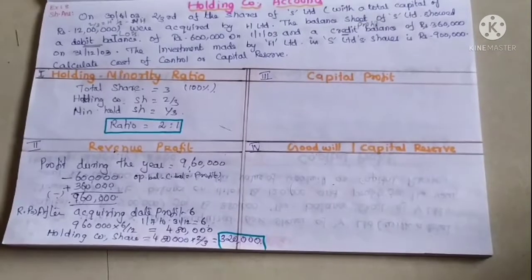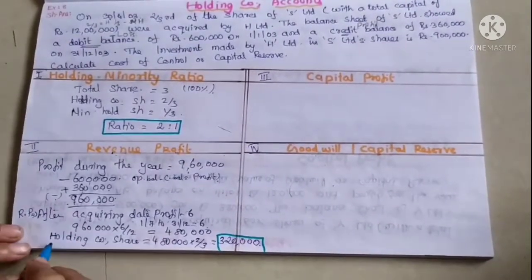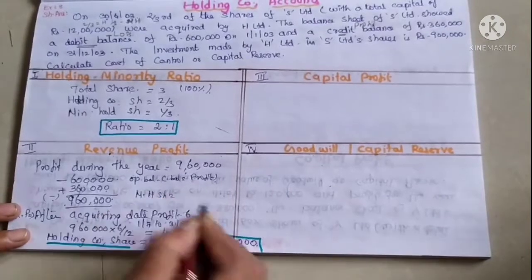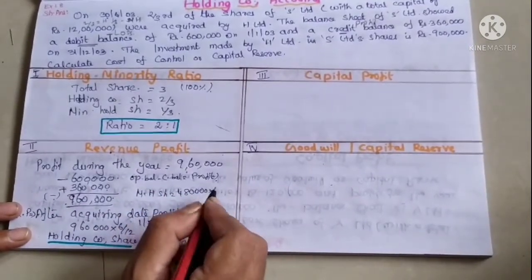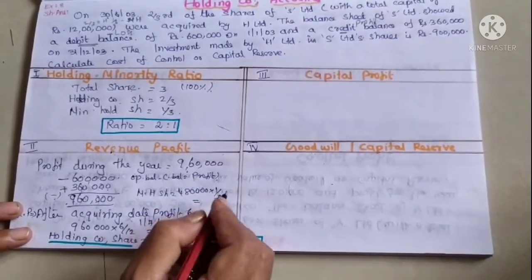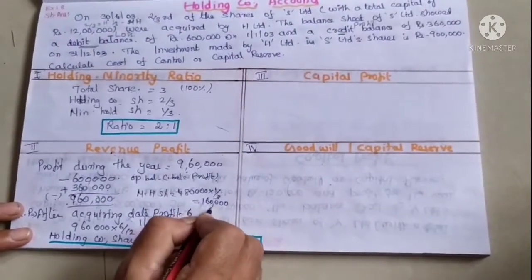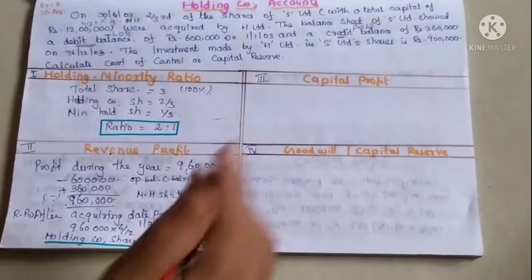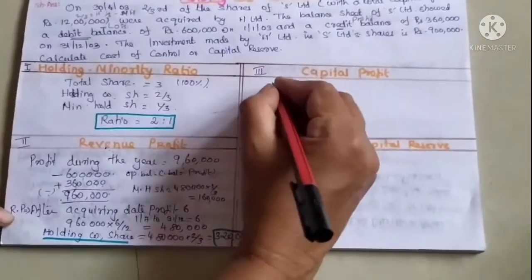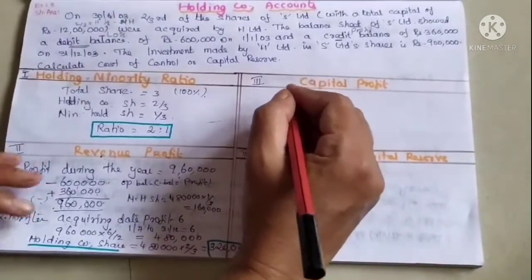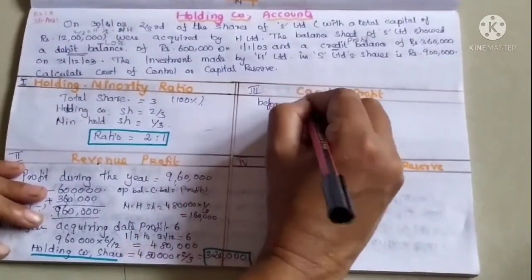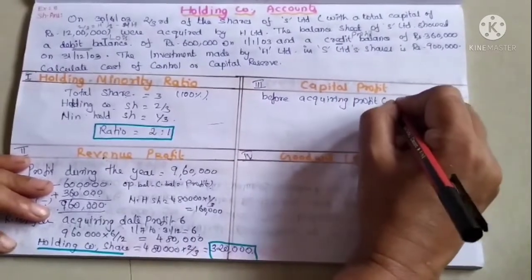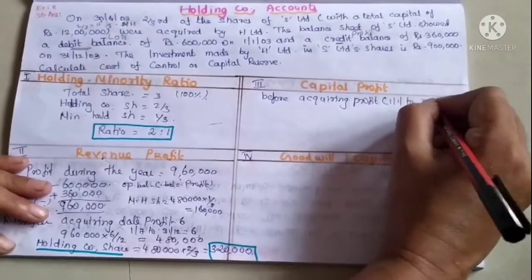Minority holders' share of revenue profit is 4,80,000 into 1 by 3, which equals 1,60,000. Next is capital profit — the profit before the acquiring date. The capital profit period gives a total of 1,20,000.